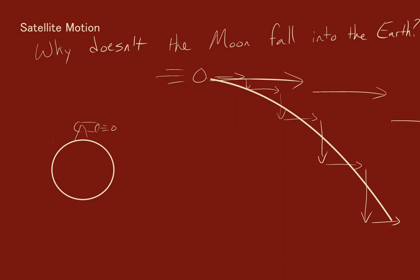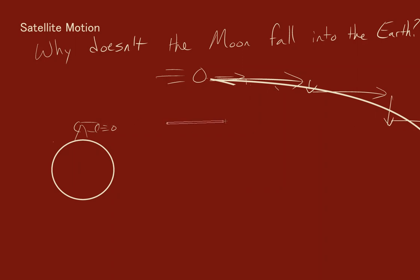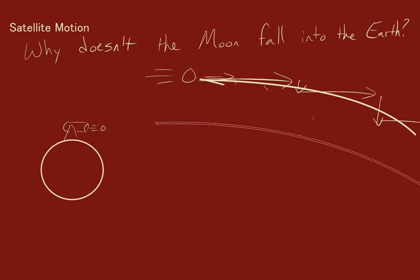So it might look something like this, and the wider the curvature—let me include those vertical components there—so the wider the curvature, the more likely that cannonball's trajectory will match that of the curvature of the earth.